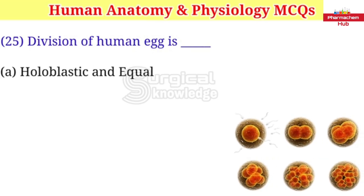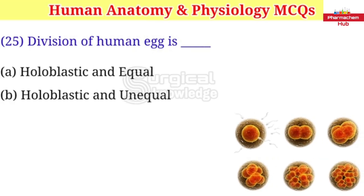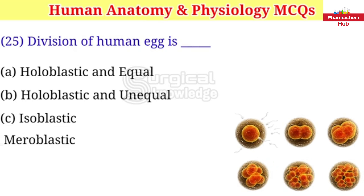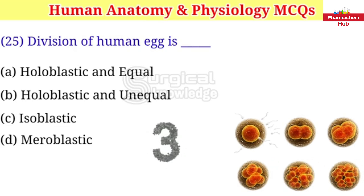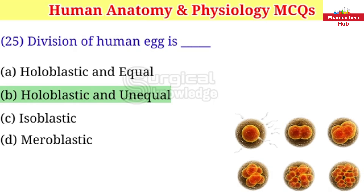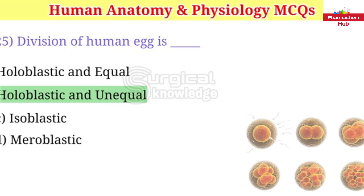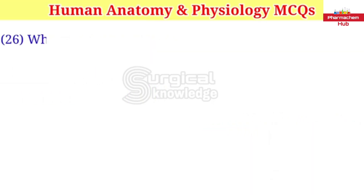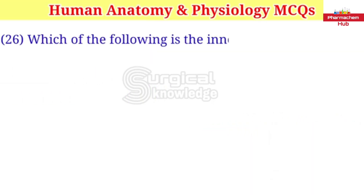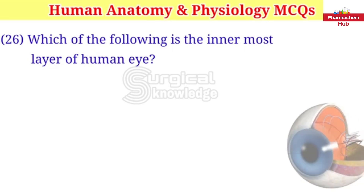Division of human egg is: A. Holoblastic and equal B. Holoblastic and unequal C. Isoblastic D. Meroblastic. Right answer is holoblastic and unequal.